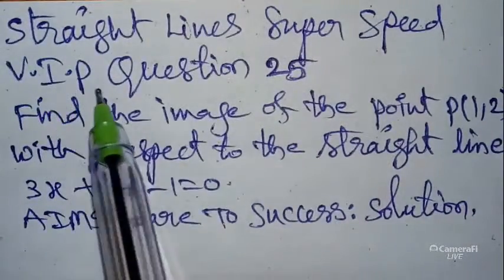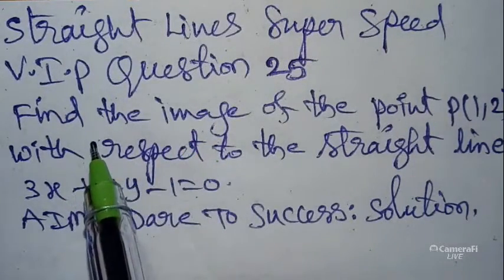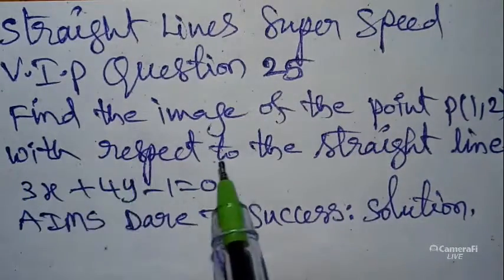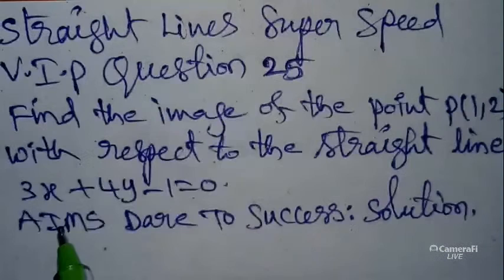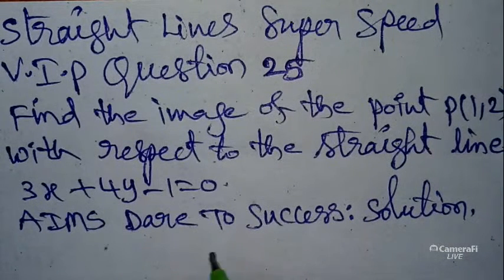VIP means Very Important Previous question. Today's question is: Find the image of the point P(1,2) with respect to the straight line 3x + 4y - 1 = 0.